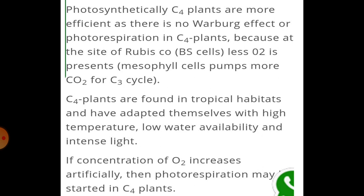C4 plants are more efficient as there is no Warburg effect or photorespiration, because at the site of Rubisco — the bundle sheath cells in C4 plants — the concentration of oxygen is less as compared to the mesophyll cells. Due to the higher concentration of carbon dioxide, only the Calvin cycle occurs in the bundle sheath cells.